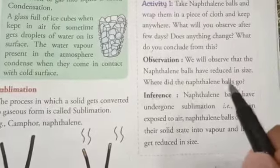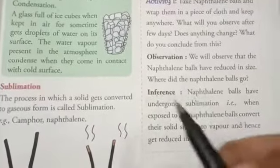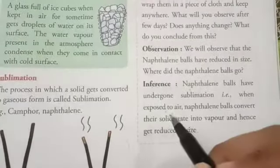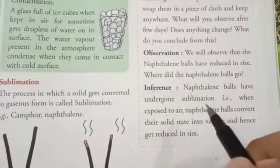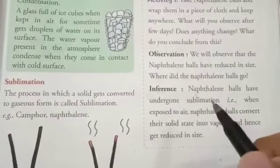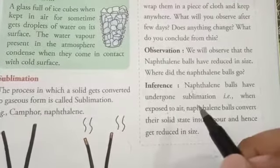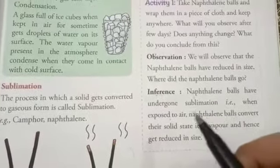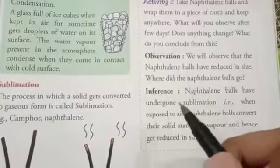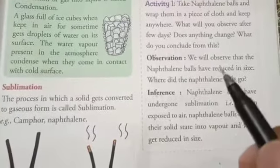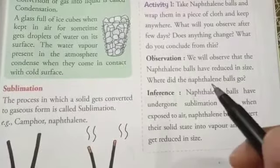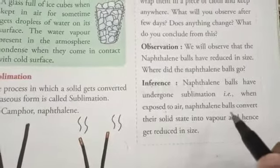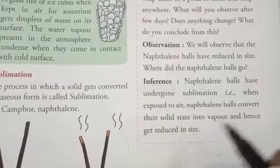Where did the naphthalene balls go? Why did their size reduce? Inference: naphthalene balls have undergone sublimation when exposed to air. When we put the naphthalene balls into a piece of cloth, they came into contact with air and underwent sublimation — meaning they changed directly from solid into gaseous form. Because the solid part changed into gaseous form, the size reduced. When exposed to air, naphthalene balls convert their solid state into vapour, and hence get reduced in size.